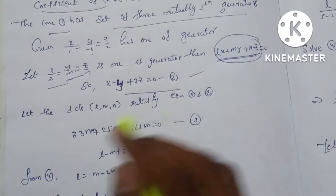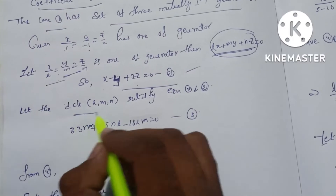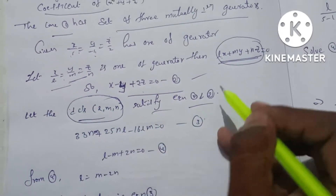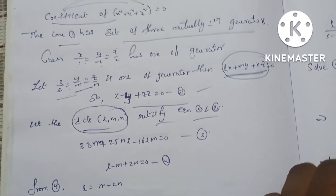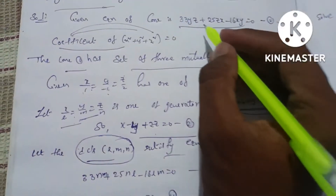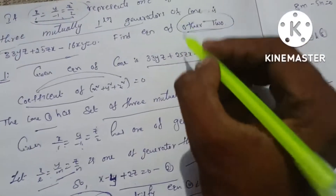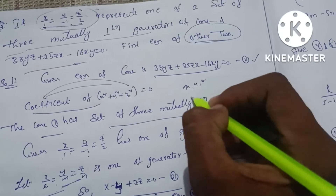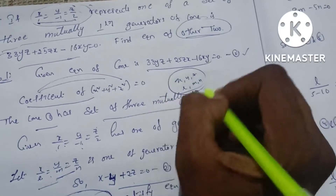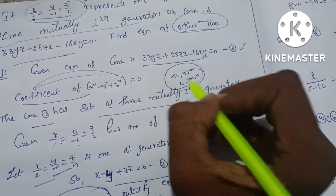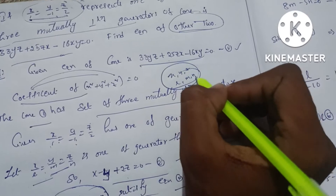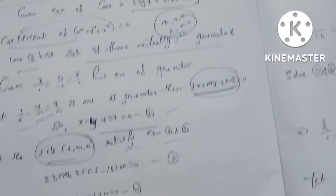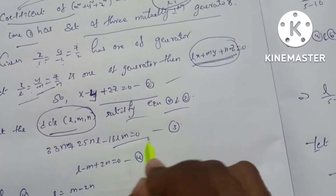Let the direction cosines l, m, n satisfy equations 1 and 2. Substituting the x, y, z and l, m, n values into the cone equation gives equation 3: 33mn + 25nl − 16lm = 0.